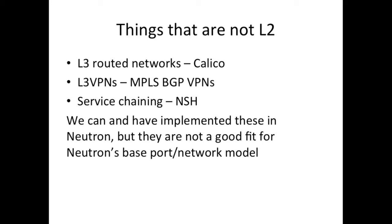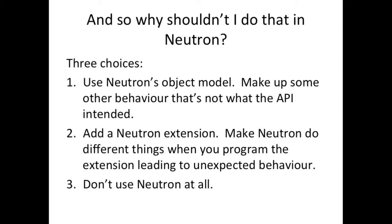All of these things can be implemented in Neutron — some of them have been — but you really have to stretch the model beyond breaking point to get there. So why shouldn't you do it in Neutron? You can do it three ways. You can use the Neutron object model — networks, ports, subnets — and add a little bit more, but you end up with behavior that's not what the API intended. You can add a Neutron extension, but again, Neutron's not doing the behavior the network-port-subnet model describes, despite ports always being on a network. Or, thirdly, you can simply not use Neutron. And it's that third point that we're trying to explore today.